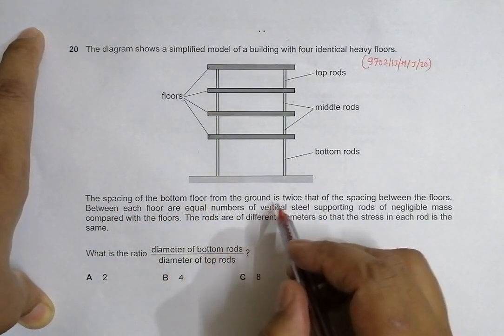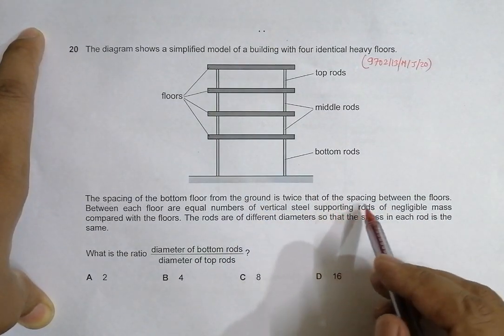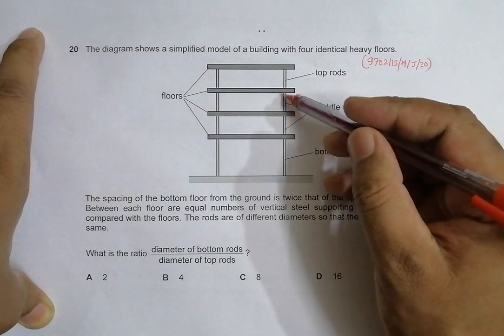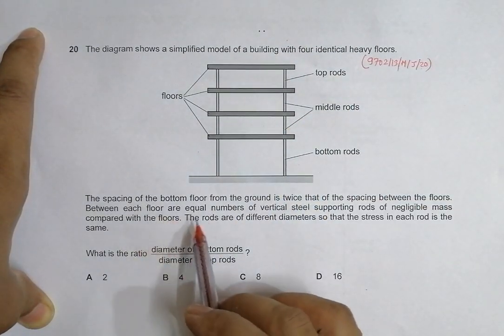The spacing of the bottom floor from the ground is twice the spacing between the floors. So this spacing between floors is equal, and the bottom spacing is twice all of them.